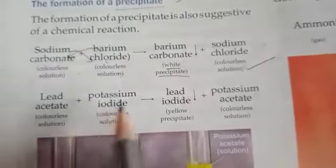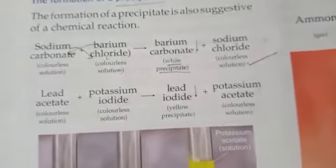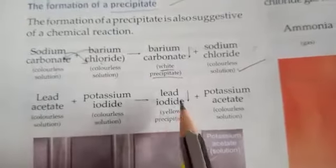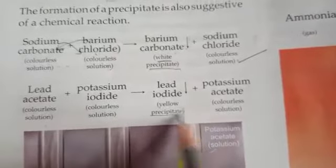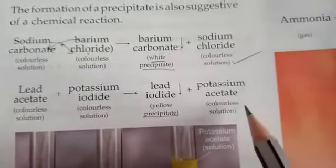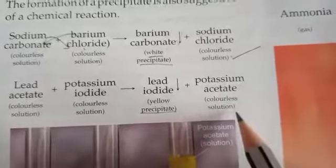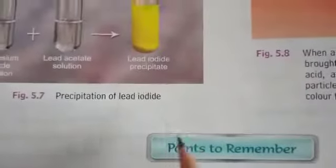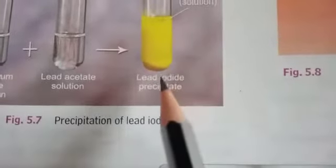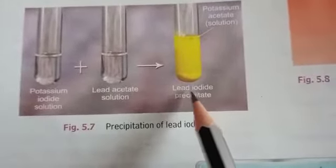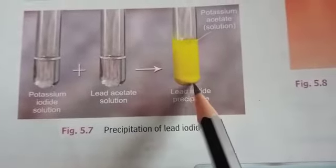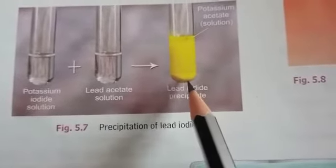Another example: lead acetate is a colorless solution, and potassium iodide is also a colorless solution. When they combine with each other, they form lead iodide, which is a yellow precipitate — so a downward arrow is placed. You can see the precipitate settled to the bottom, which we can remove with filter paper.